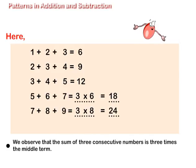Similarly, to complete 7 plus 8 plus 9, we multiply 8 by 3 and get 24.